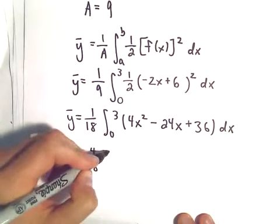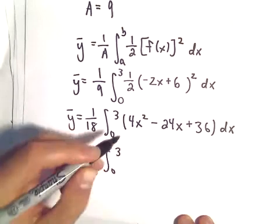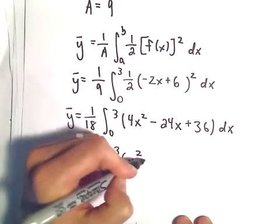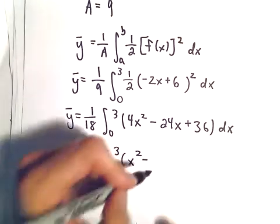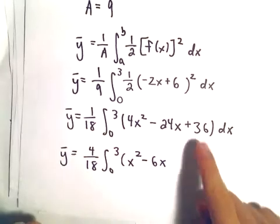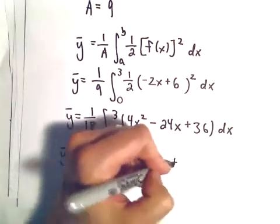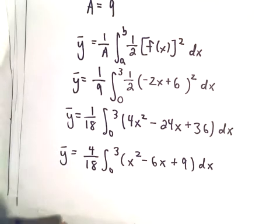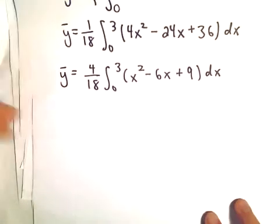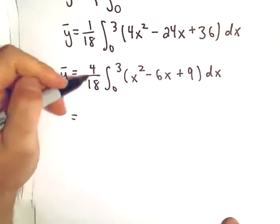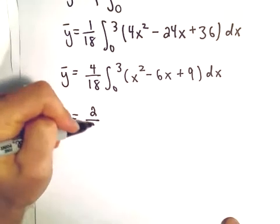Pulling the 4 out, we get 4/18, the integral from 0 to 3 of (x² - 6x + 9) dx. This is easier when we plug in the limits of integration. 4/18 simplifies to 2/9.